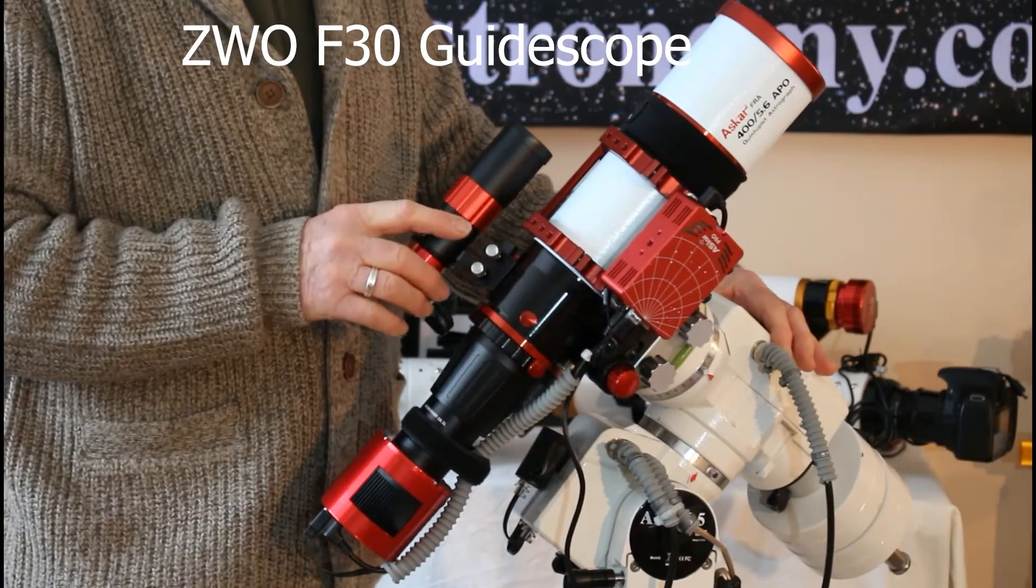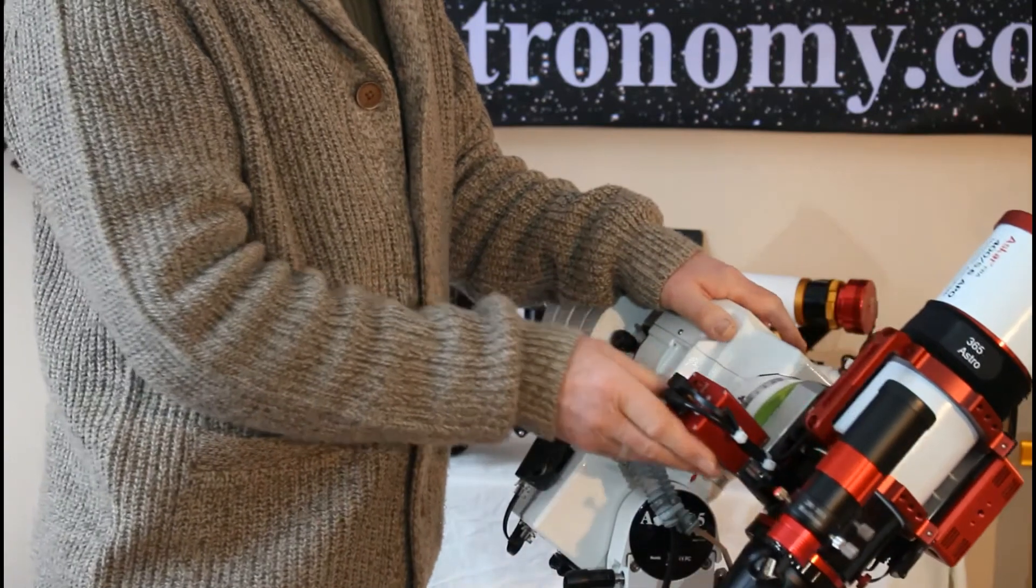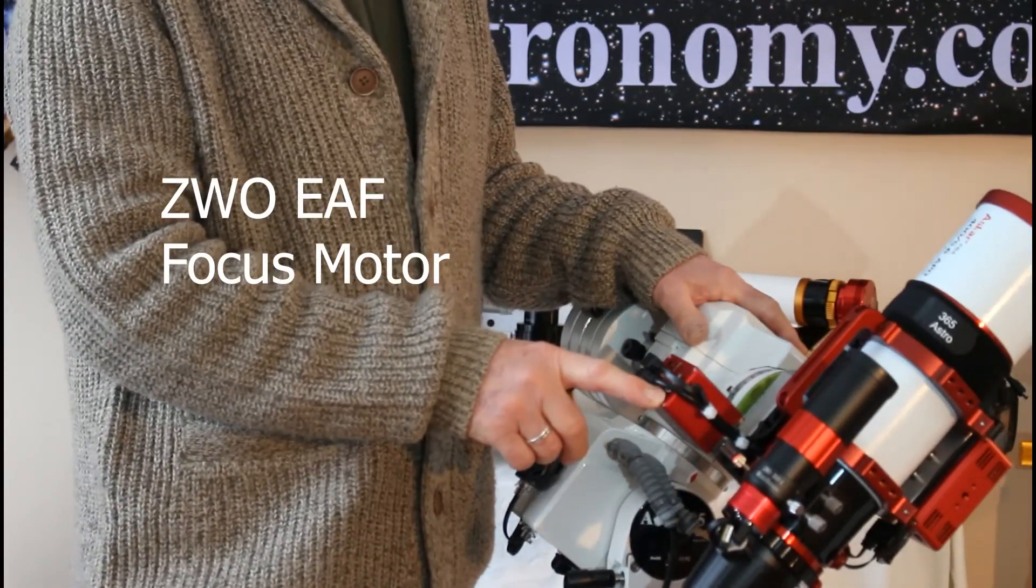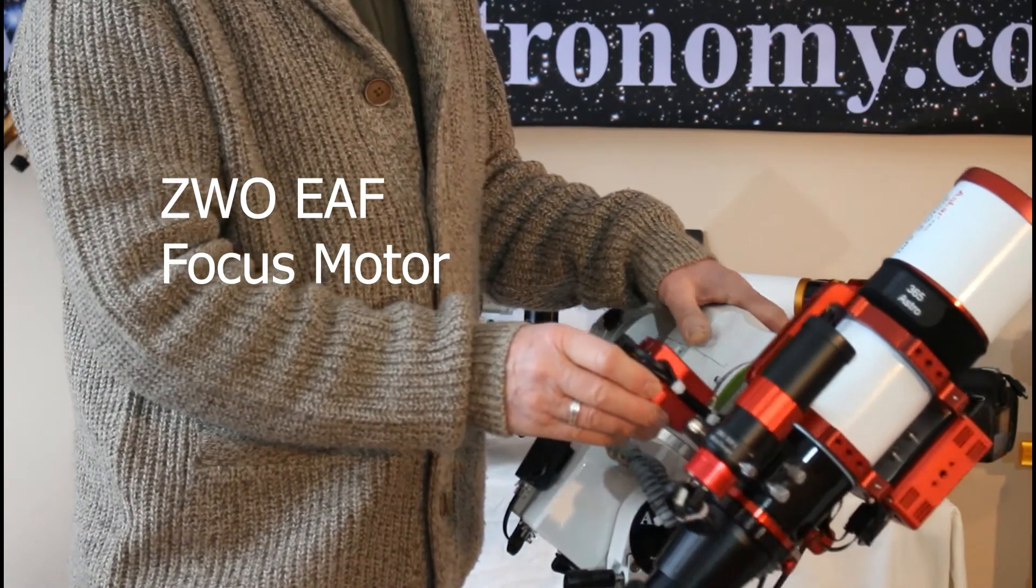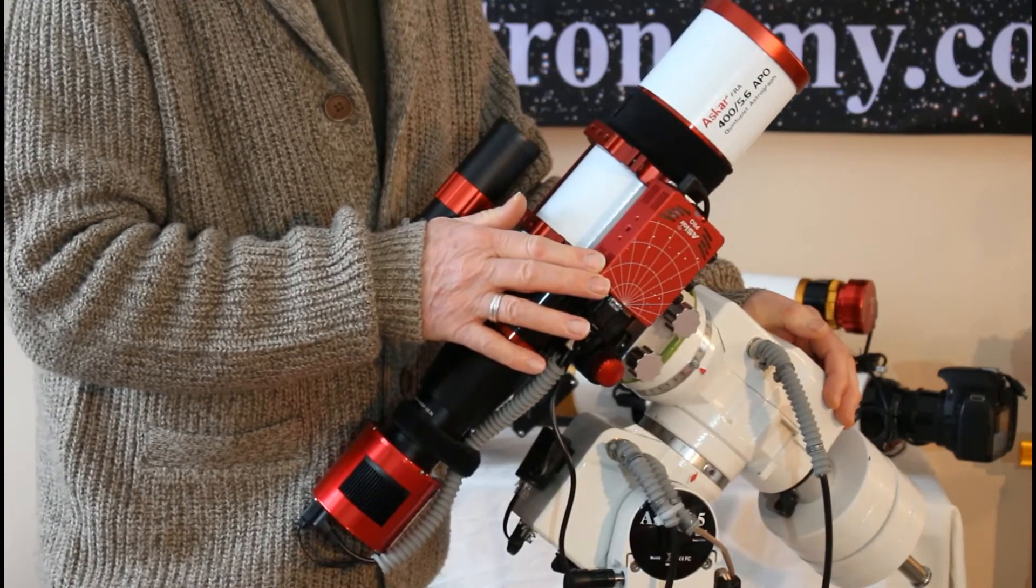Now you may have noticed this on the other side. This is a ZWO EAF electronic autofocuser, and this gets its power from the Assier Pro, which I'll tell you a little bit more about in a moment.